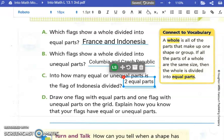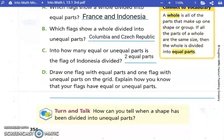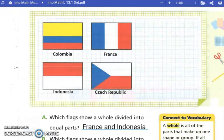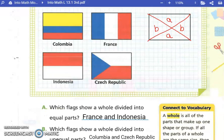Let's read our little yellow thing over there. A whole is all of the parts that make up one shape or group. Our whole class is all 11 students, right? If all the parts of the whole are the same size, then the whole is divided into equal parts. Draw one flag with equal parts and one flag with unequal parts on the grid.